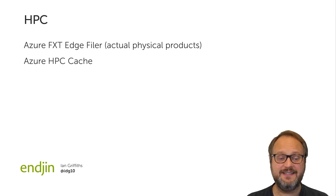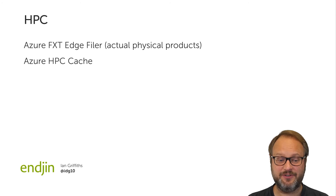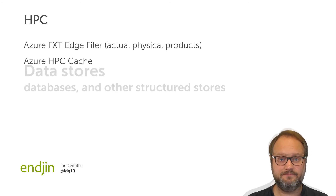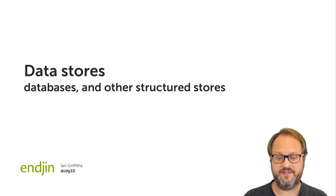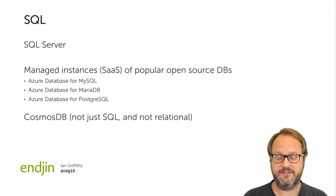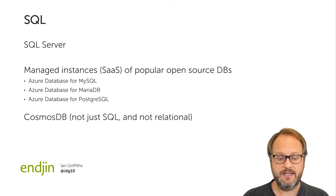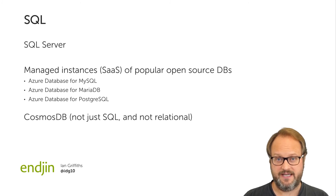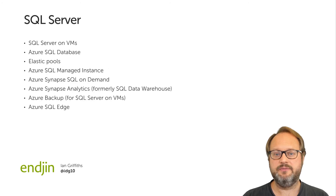Finally, there are file-based offerings for specific high-performance compute scenarios — Azure FXT Edge Filer, an actual physical product you install in your office, and a high-performance computing cache system — though they serve quite specialized workloads. Moving on to more structured forms of data storage, the obvious thing to look at now is SQL. There are several different ways of supporting SQL: Microsoft SQL Server in various forms, managed hosted instances of MySQL and PostgreSQL, and Cosmos DB with a SQL-based personality.